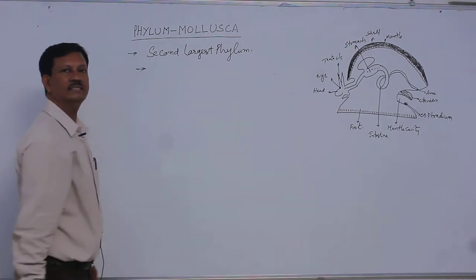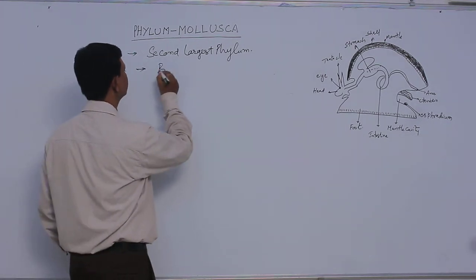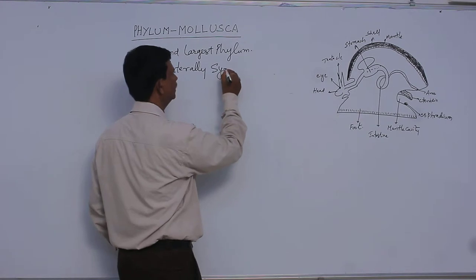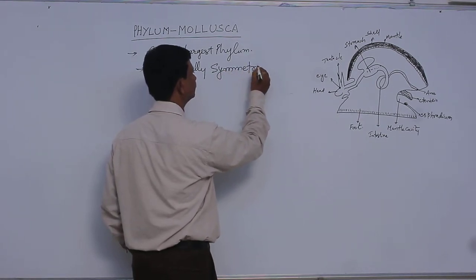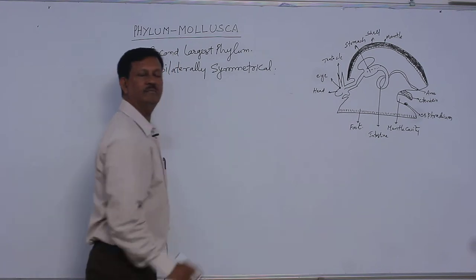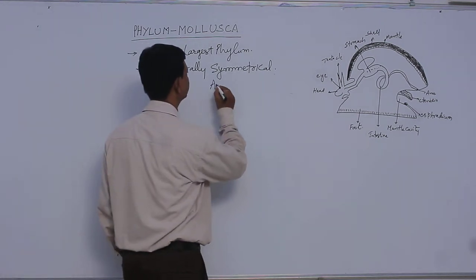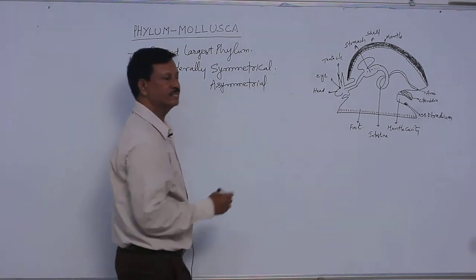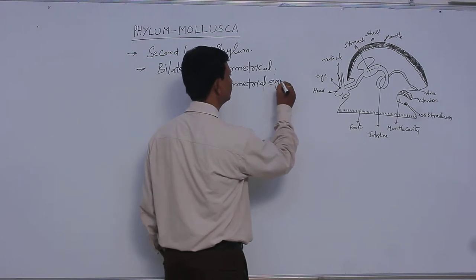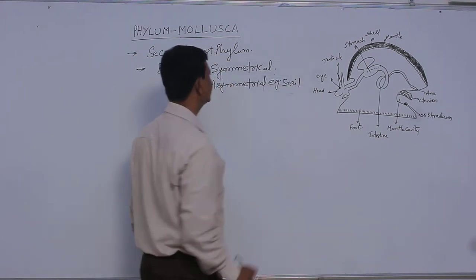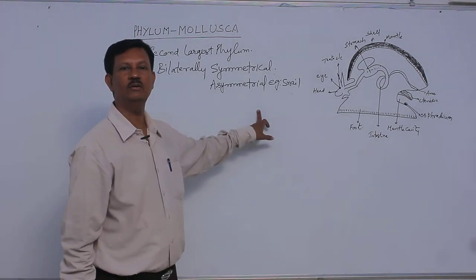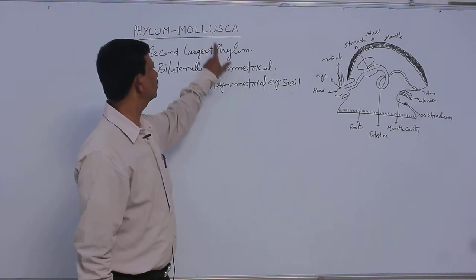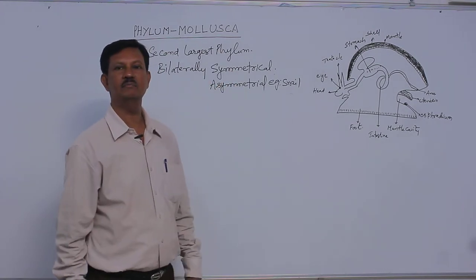These are bilaterally symmetrical animals. Some animals are asymmetrical — for example, the snail. In snail, the body cannot be divided into two equal halves, that's why they show the asymmetrical type. But most Mollusca show bilateral symmetry.